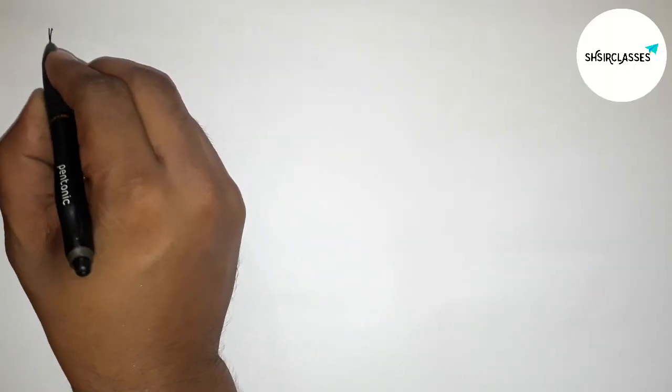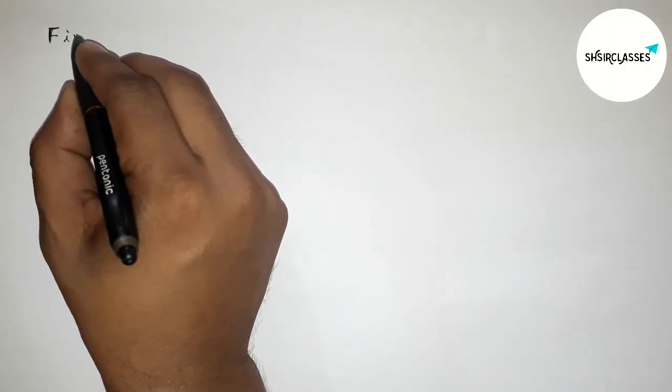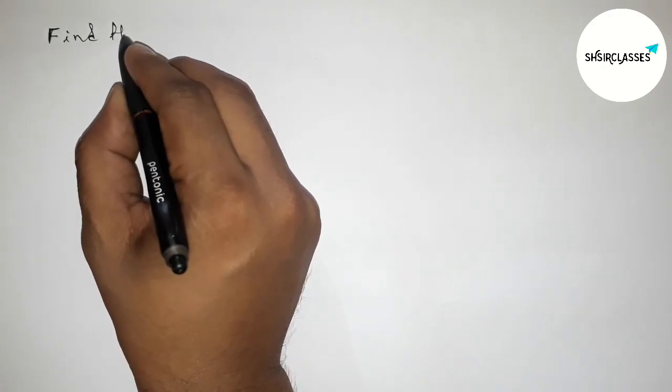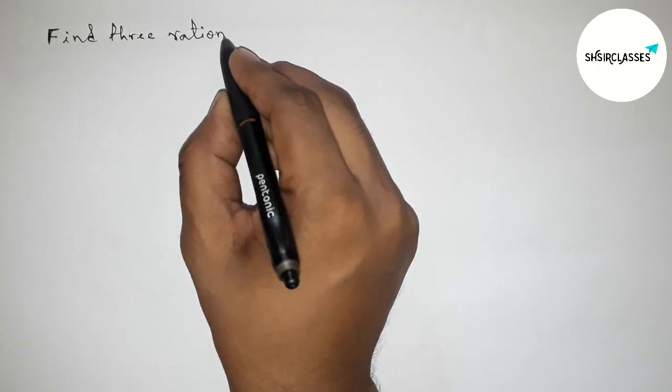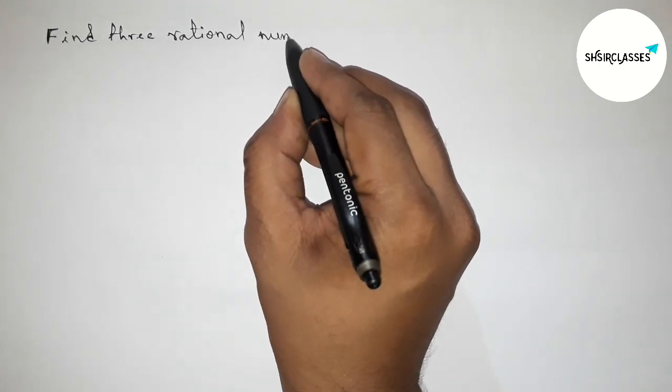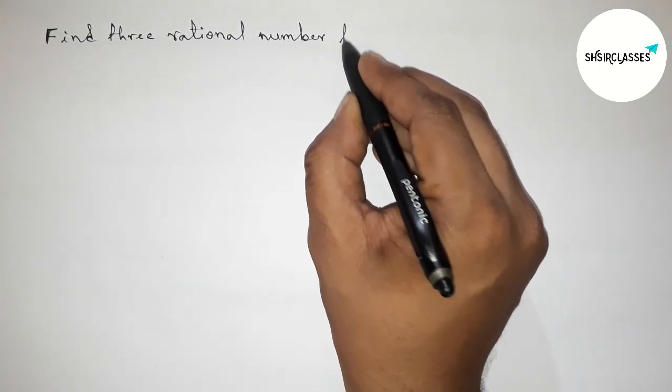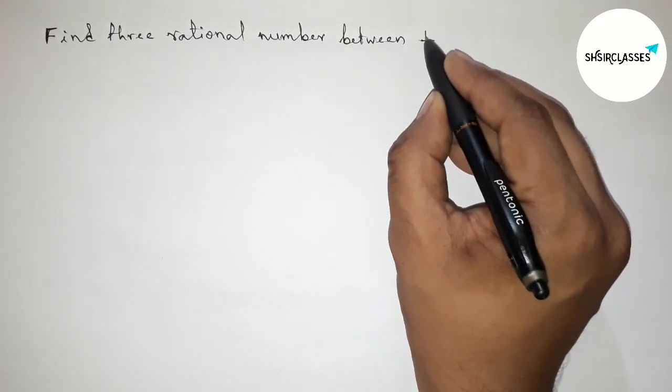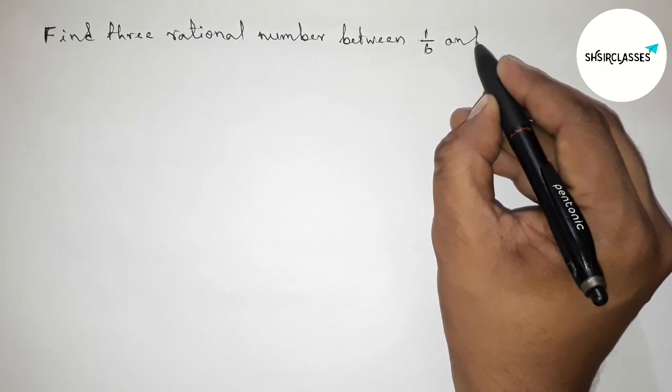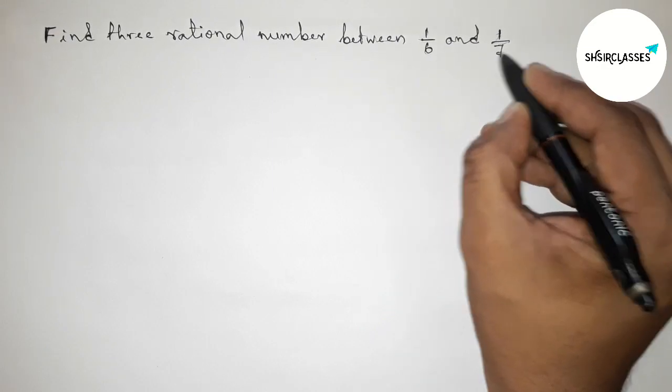Hi everyone, welcome to SI Share Classes. Today in this video we have to find three rational numbers between 1/6 and 1/7 in an easy way. So please watch the video till the end, so let's start the video.